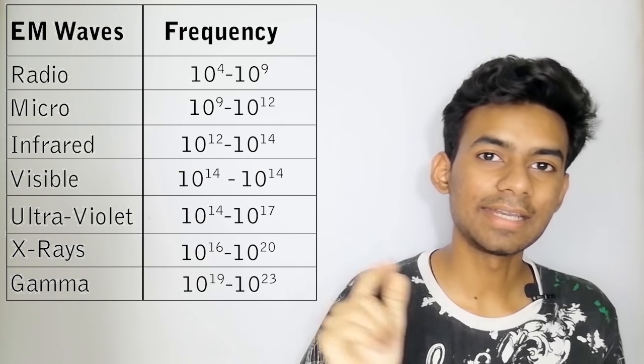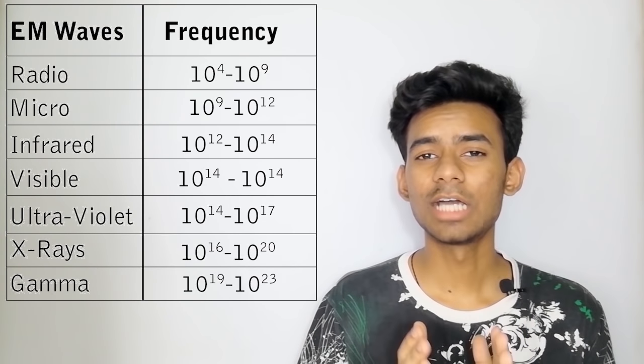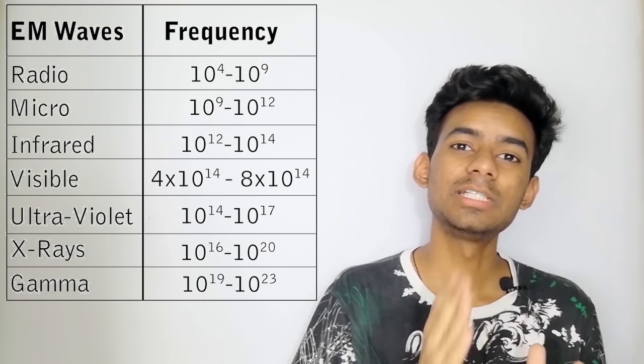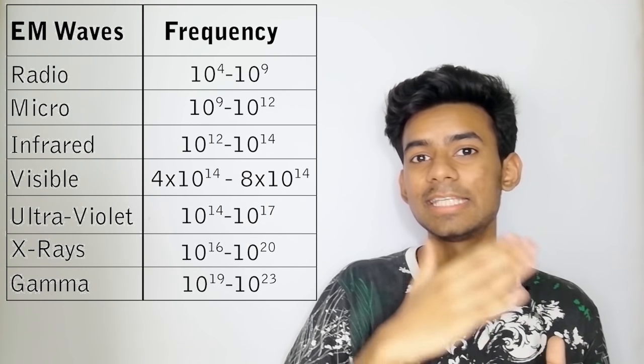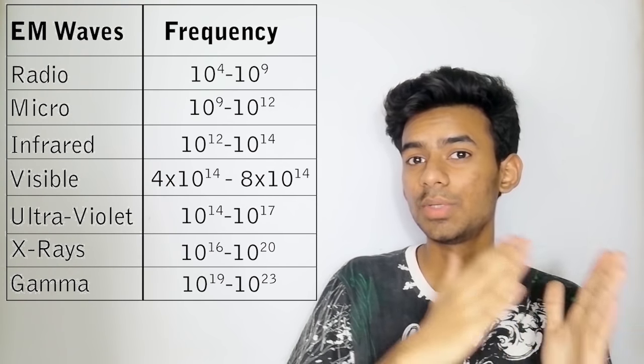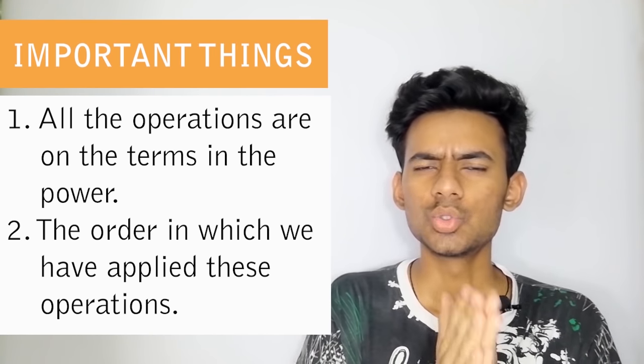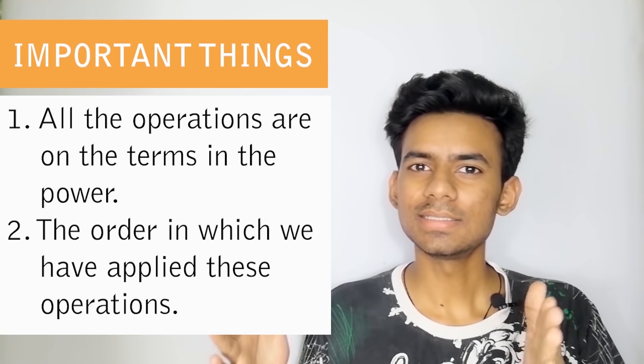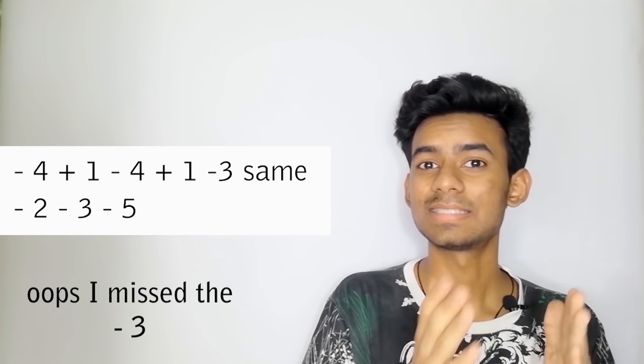This is microwave minimum value. Radio waves maximum value minus 5, 10 to the 4. And here is important: visible light range has 10 to the 14 on both sides. If we focus on visible light in the fourth position, multiply by 4. If we double to 8, multiply by 8. Visible light maximum value is 8 into 10 to the 14. The whole series pattern we have made: minus 4 plus 1, minus 4 plus 1 same, minus 2, minus 3, minus 5.